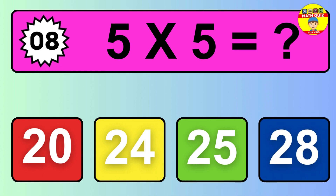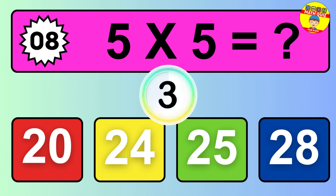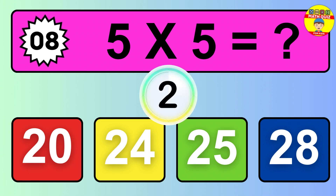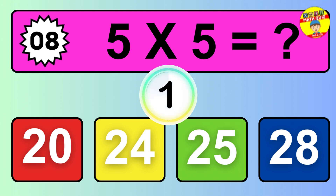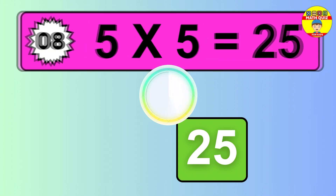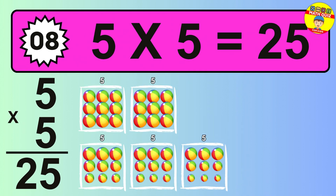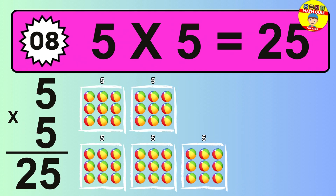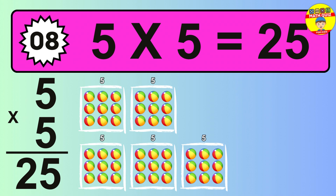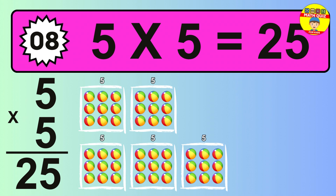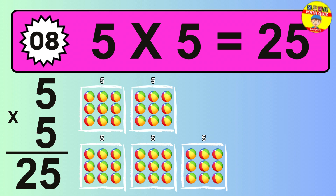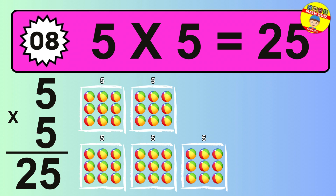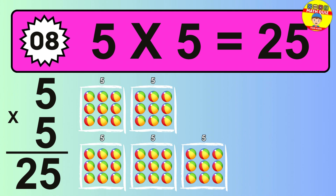Question 8. 5 times 5 equals what? The answer is 5 times 5 is 25. To calculate, we have 5 groups with 5 balls each one. So how many balls do we have? 25 balls.